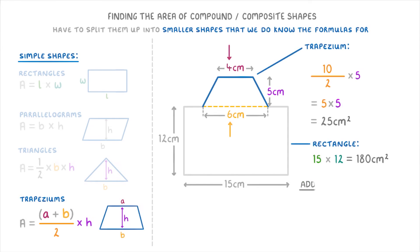Then to finish, we just add together the areas of the rectangle and the trapezium, so 180 plus 25, to get a total area of 205 centimeters squared.